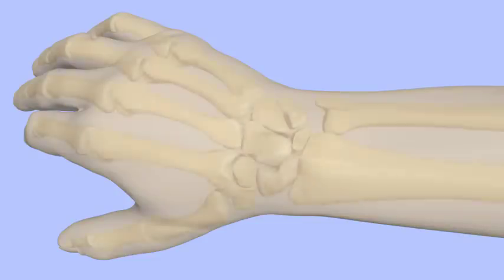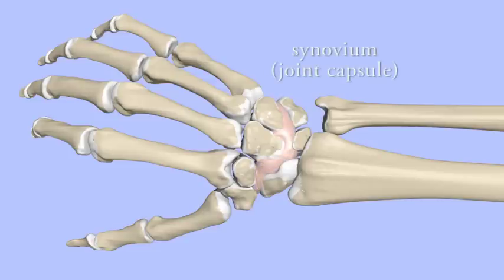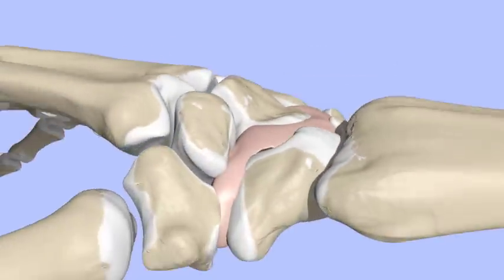Bones come together at joints. The ends of the bones are protected by cartilage where they fit together. Each joint is surrounded by synovial tissue that forms a joint capsule. Within the joint is synovial fluid, which helps the bones to glide smoothly.